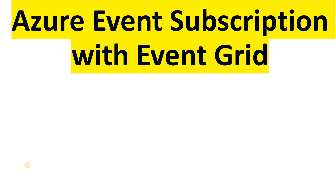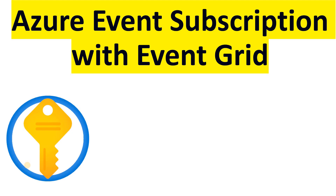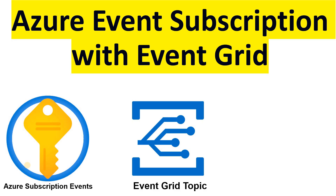In this video we will see how to enable an Azure event subscription on an Azure subscription using Event Grid. I have an example Azure subscription and we're going to enable the event subscription on it. Every activity happening on Azure is tracked as an activity log, called an event. You can subscribe to that event, collect the required events, and perform certain activities - for example, alerting, triggering a workflow, or other automations. We will create an Azure Event Grid topic and use it in the Azure subscription event configuration.